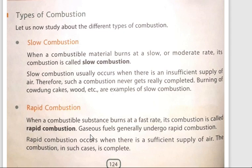If we burn a wooden block, only the outer part of the wooden block is in contact with air. The inner part is not in contact with air, so combustion will not take place properly — it will take time. Similarly, for the cow dung cake, only the outer part in contact with air gets the proper amount of oxygen. So combustion will be slower. Because the supply of oxygen is not proper, combustion occurs at a slower rate.